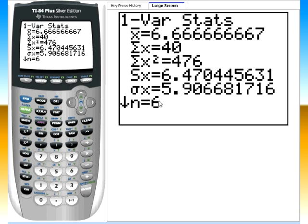Now notice you get a huge output here. This first thing is the sample mean. This is the sum of all the numbers you typed in. This is the sum of the squared numbers. These are both standard deviation, one is sample, one is population. N is how many points you had.